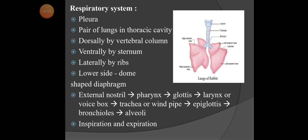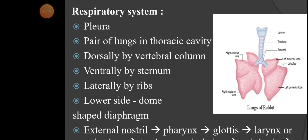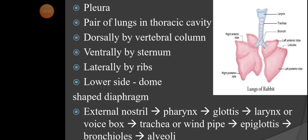The lungs are covered by the pleura, a two-layered membrane, which keeps the lungs safe. One pair of lungs is present in the thoracic cavity. Dorsally, the lungs are supported by the vertebral column; ventrally (front side) by the sternum; and laterally by the ribs on both sides.